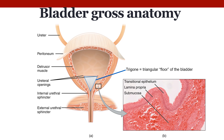The inferior portion of the bladder has a triangular-shaped area called the trigone. This area serves as a funnel to help drain urine into the urethra, and it is also very sensitive to expansion. Once stretched beyond a certain degree, it will signal to the brain that it needs to empty. The urethral openings are just above that trigone, with the ureters running behind the bladder and emptying just above that structure on either side.